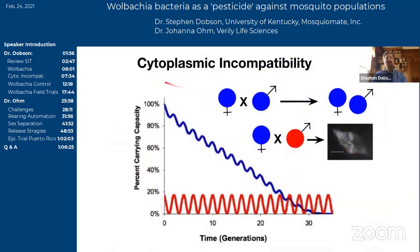Wolbachia is a tremendous evolutionary success, and part of the reason for that is its ability to manipulate the reproduction of its host. What we'll be talking about today is called cytoplasmic incompatibility, or CI. We've heard about Wolbachia a couple of lectures ago, and I'm going to spend a few slides contrasting approaches. What we're going to discuss today is very different from what Dr. Moreira talked about a couple of weeks ago. Yes, we're dealing with some of the same species of mosquitoes and some of the same Wolbachia species, but it's a very different approach.